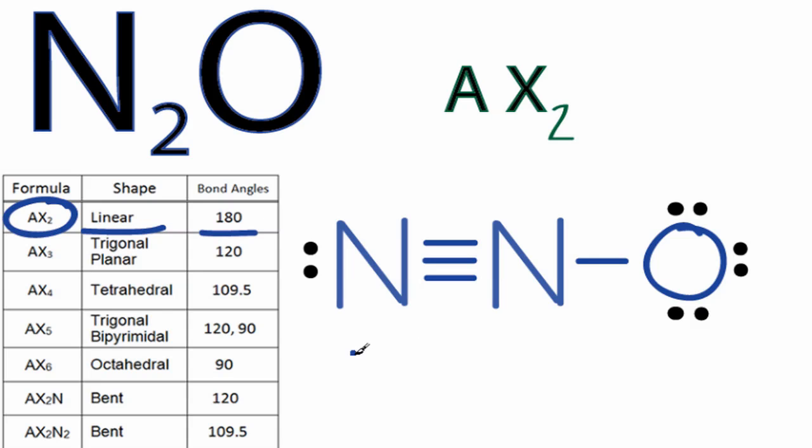So the bond angle across here, which is just flat, is 180 degrees. So that's the molecular geometry, or shape, for N2O.